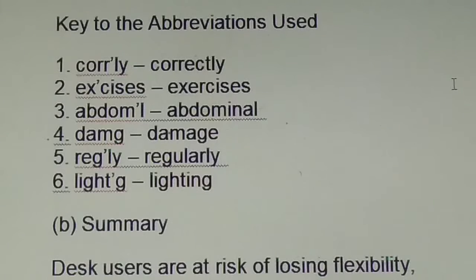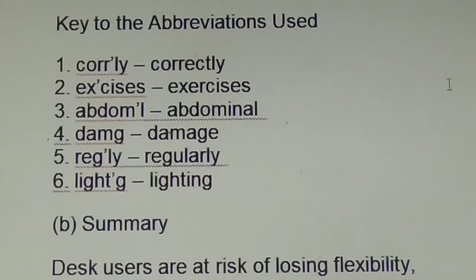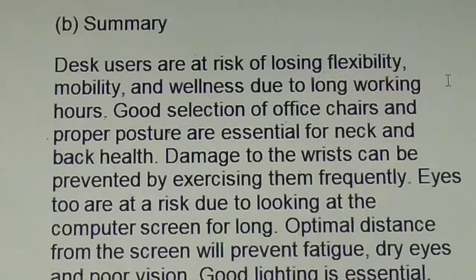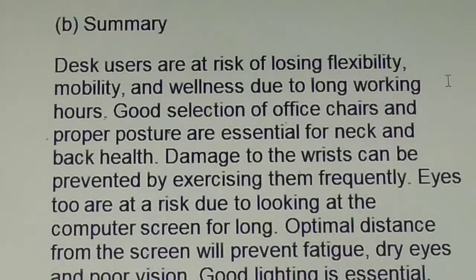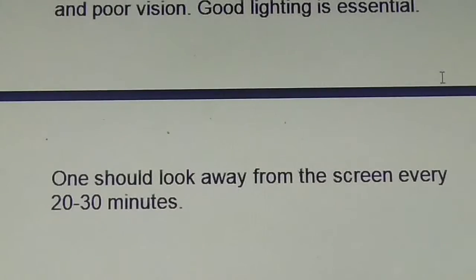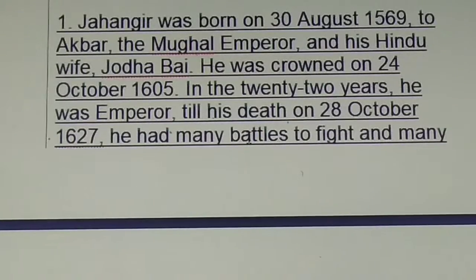Have a look at it once again — how to write and how to answer the question on note making. See how the points are mentioned and then the sub-points. Please go through it. Especially the key to abbreviations — see how it is written. You have to write like this: 'Key to abbreviations used' and then write the word and the abbreviation. On top write 'Key to abbreviations'. This is a sample I'm showing you so that you are able to read, learn, and write properly. I hope you got it.